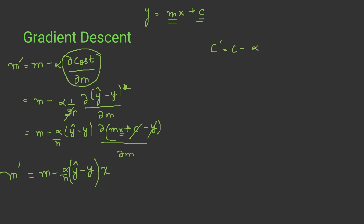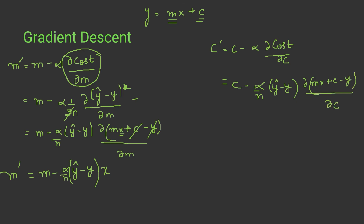Similarly for c: new c equals c minus alpha times del cost by del c. Following the same differentiation steps, when we differentiate (mx plus c minus y) with respect to c, the mx term cancels and del c by del c equals one. So the final update rule for c is: new c equals c minus (alpha / n) times the summation of (y predicted minus y) times one.